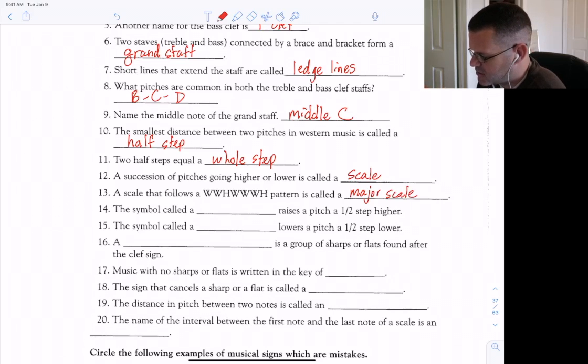The symbol called a sharp raises a pitch a half step higher. A symbol called a flat lowers a pitch a half step lower. A key signature is a group of sharps or flats found after the clef sign.